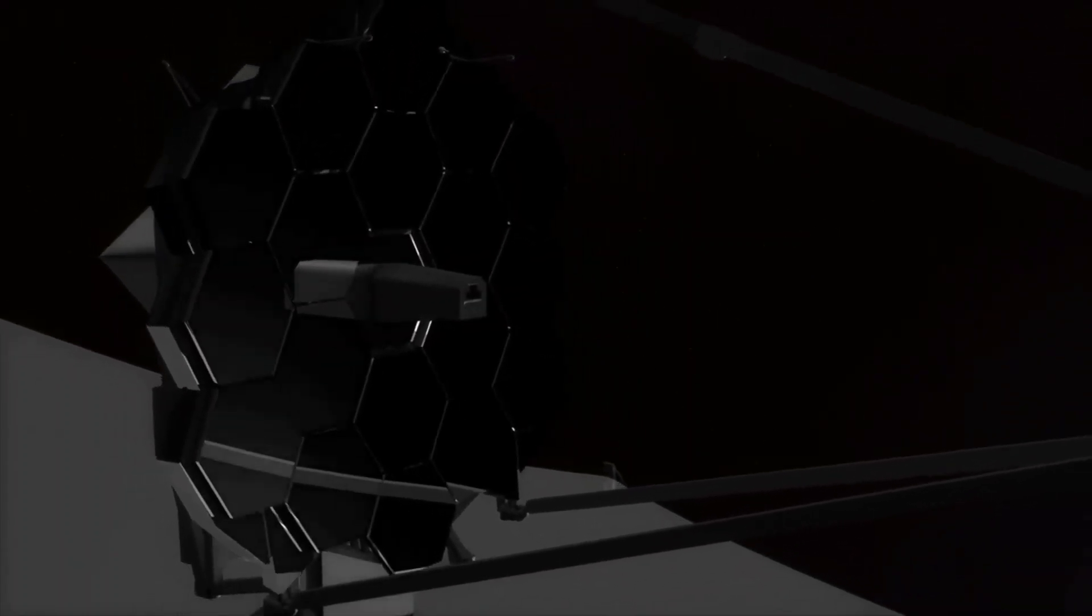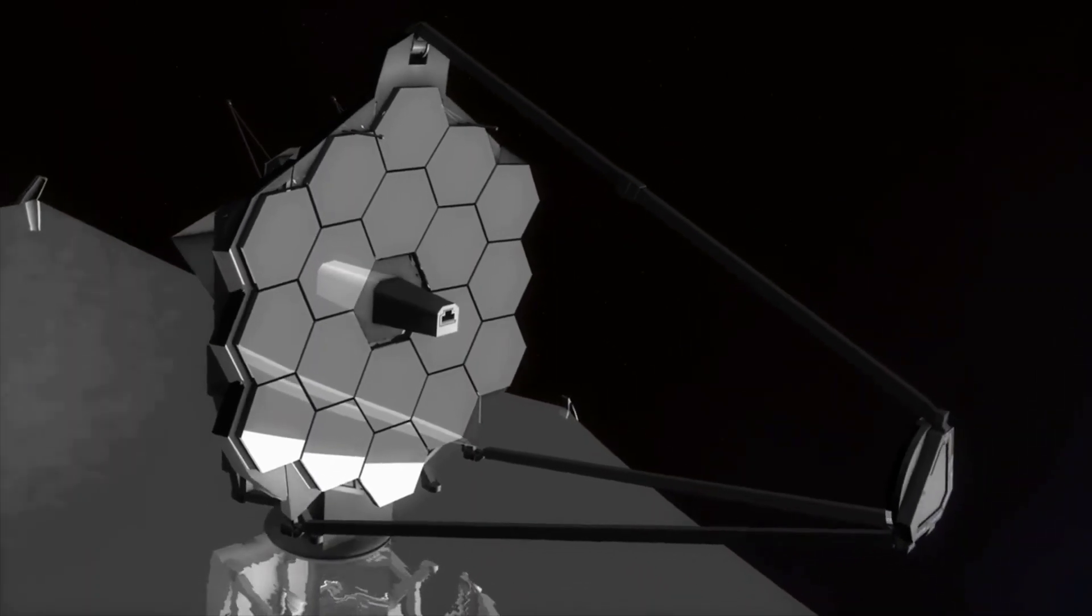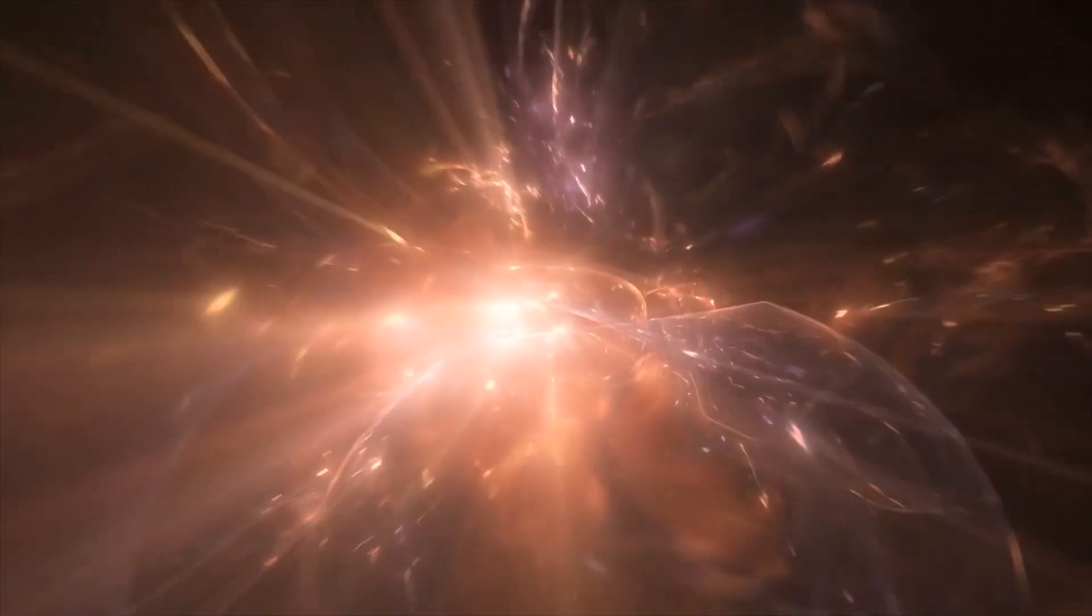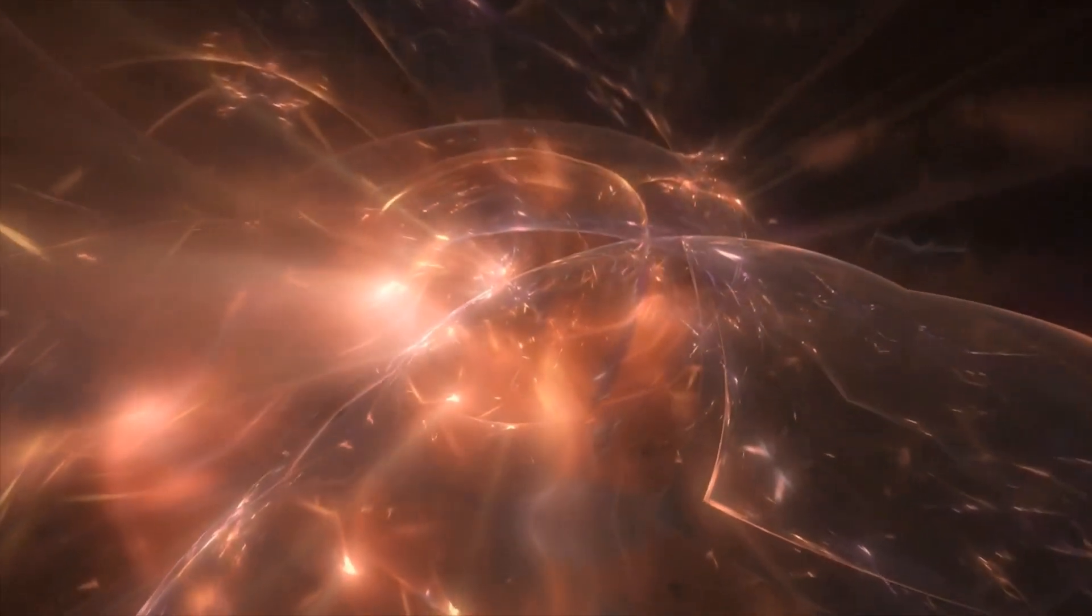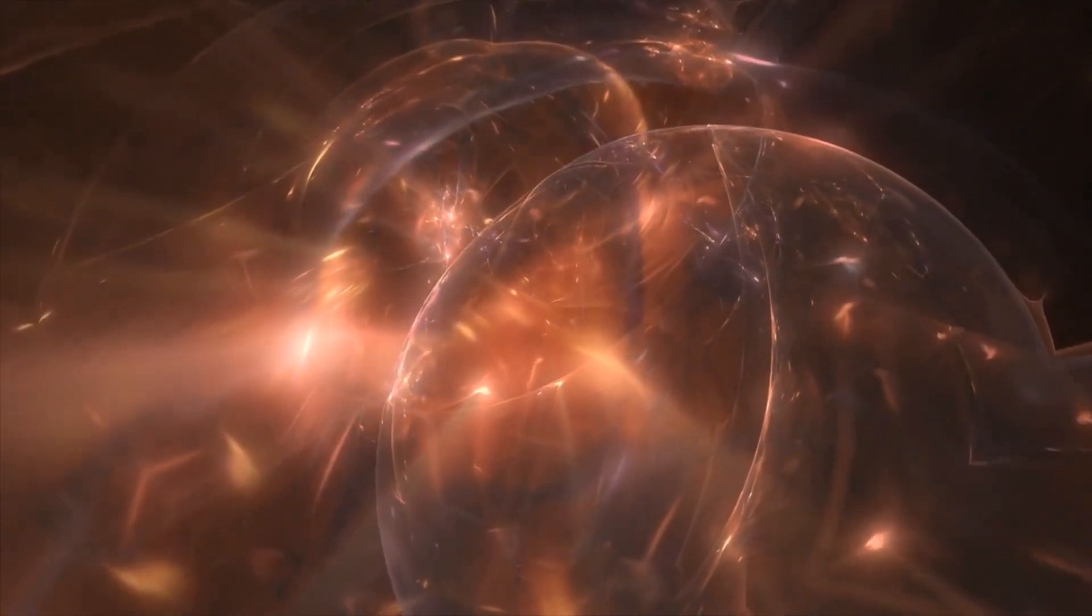Webb's near-infrared camera and IR cam collects data using a variety of filters, each of which covers a distinct wavelength range. The look-back period and redshift of the galaxy are generally indicated by the wavelength range in which it vanishes.